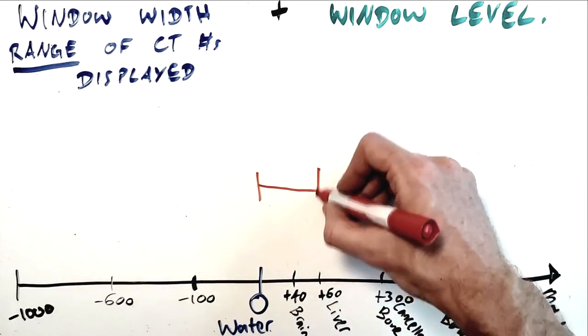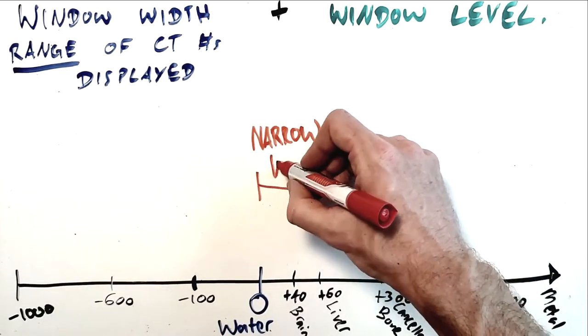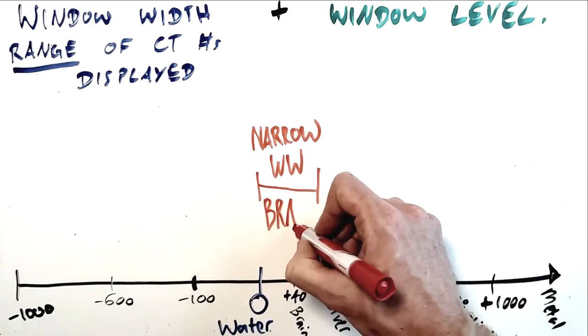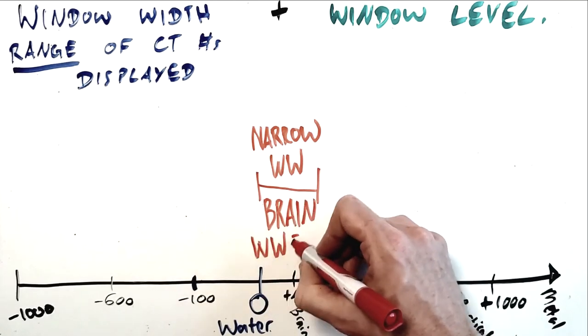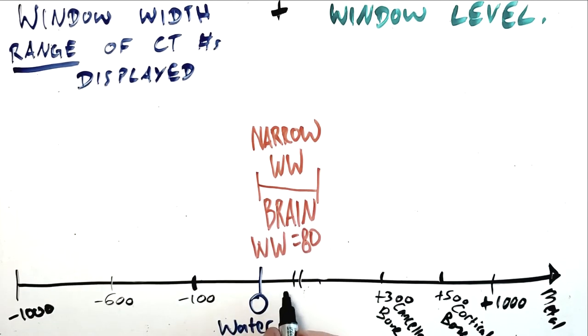Now on the other hand, an example of where you would need a narrow window width of around 80 would be a brain window. This is because we have adjacent structures which are very close in density, namely, aptly named, the gray matter and the white matter of the brain. And we want to be able to differentiate between those two tissues of very similar density to one another. So we use a narrow window width to designate a gray value between black and white to every voxel in that very narrow range, meaning that all the tissues of the brain get their own gray value and we can differentiate between them.